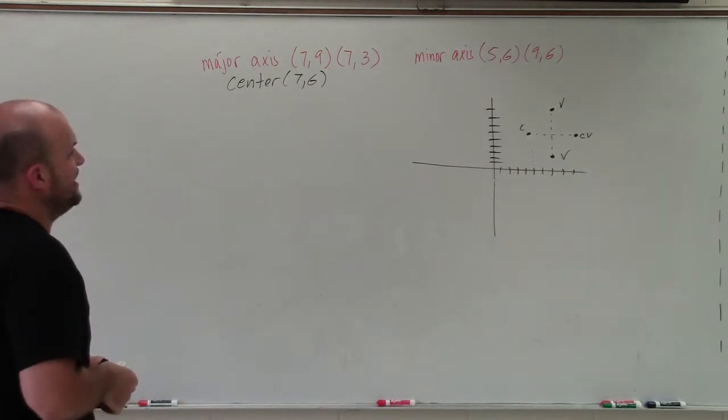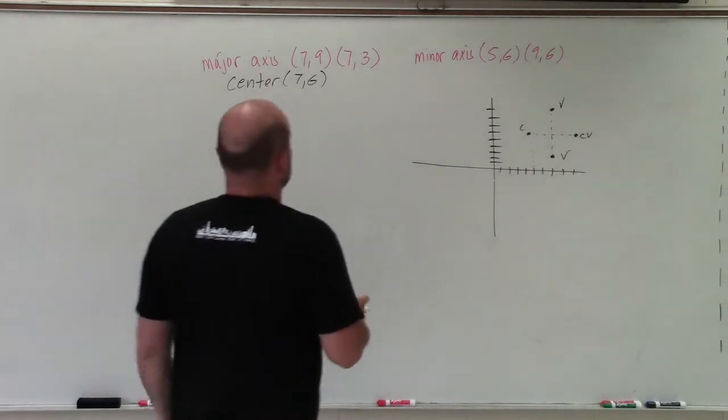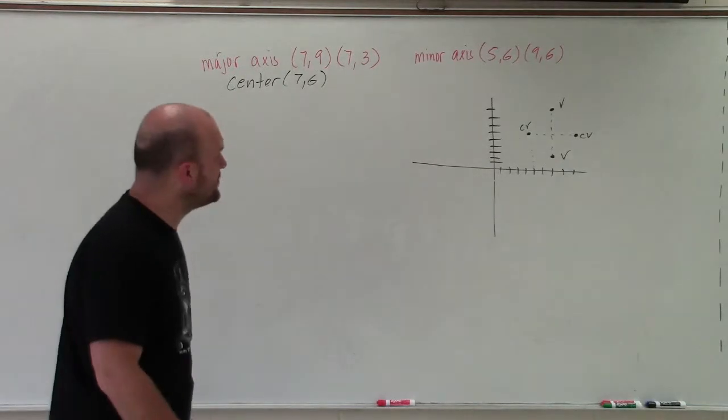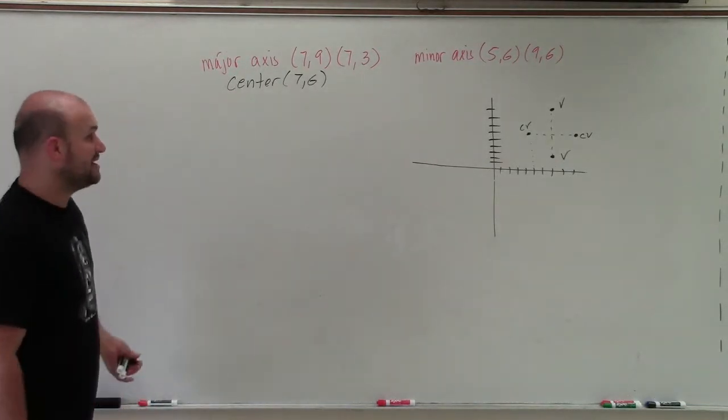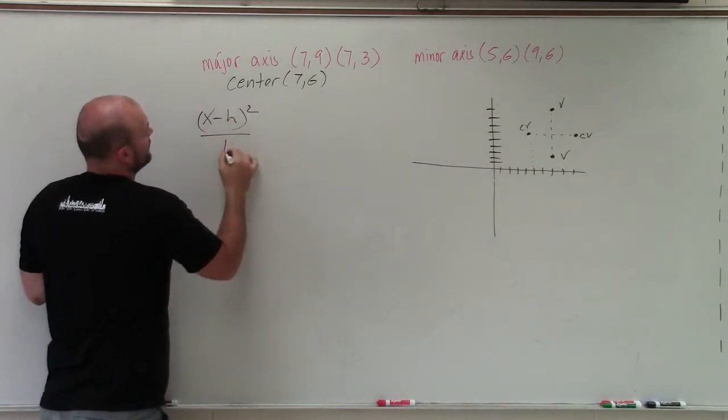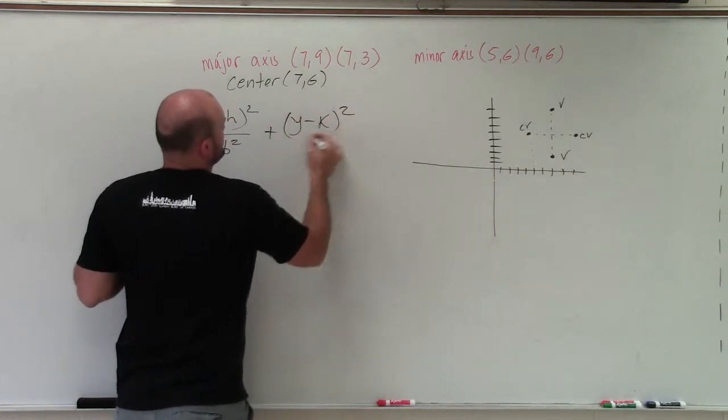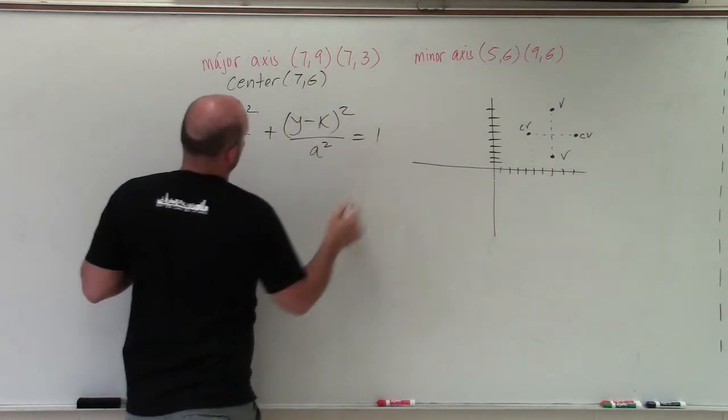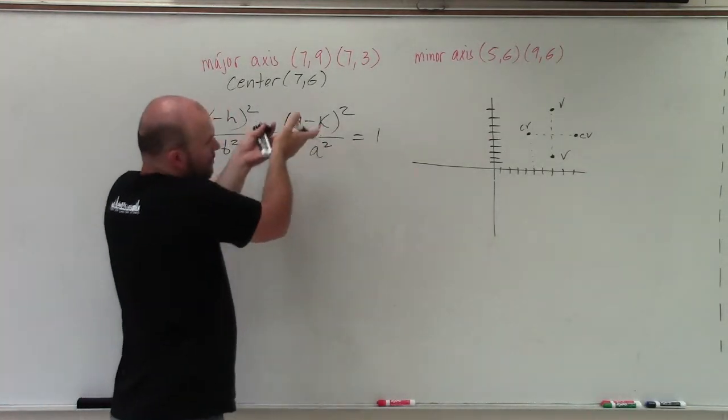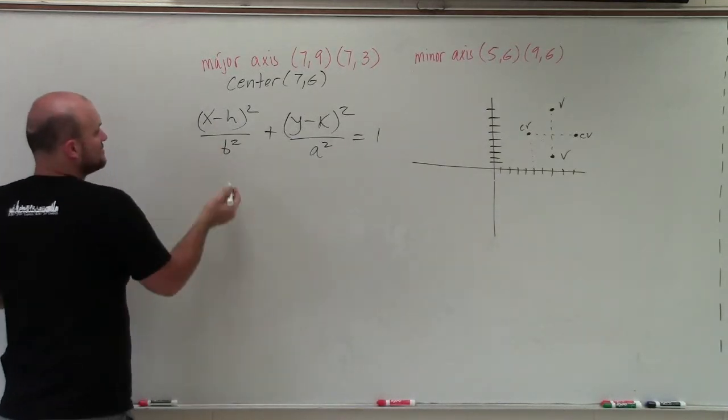So next thing is, well, we know the center. We know A. And we know B. And guess what, ladies and gentlemen? That's all we need. We don't care about C or the foci. We can figure that out when we need to graph it. So right now, to write the equation, since I know it's vertical, I know my equation is going to look like this: (x - h)² / b² + (y - k)² / a² = 1. Again, since the major axis is vertical, my a² is going to be under my y. If the major axis was horizontal, my a would be under x.